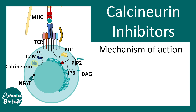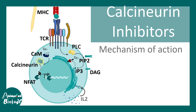Calcineurin is a phosphatase, so it dephosphorylates various substrates. One of the things it dephosphorylates is the NFAT transcription factor. NFAT can only translocate into the nucleus when it is dephosphorylated, and this dephosphorylation event is triggered by calcineurin. Once NFAT is inside the nucleus, it allows the transcription of the interleukin-2 gene, and the interleukin-2 produced gives rise to autocrine stimulation for T cell activation.